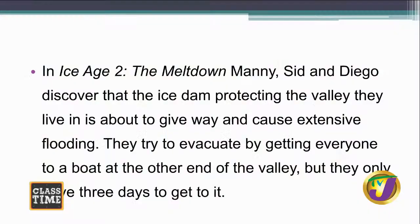In Ice Age 2, Manny, Sid, and Diego discover that the ice dam is about to break, and if it does, the entire valley will be flooded with much damage and loss of life. They have to evacuate everyone to safety before this happens — they have only three days. This sets up a race-against-time situation: the characters must overcome the conflict before a particular time, and the conflict is caused by their natural environment.